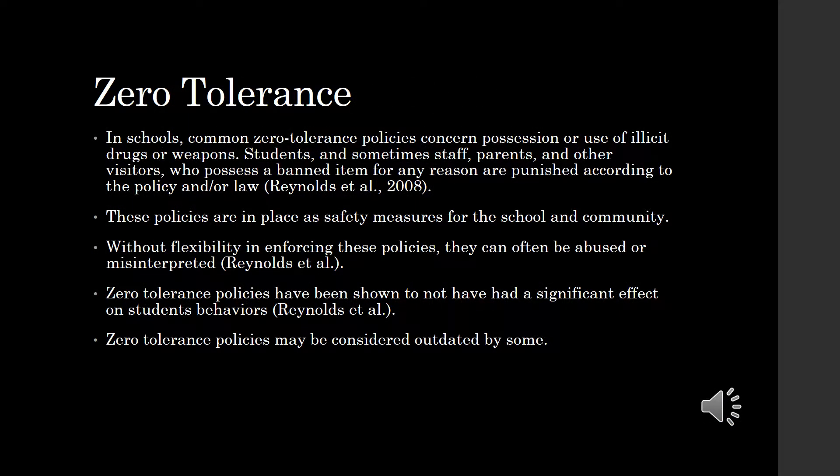Zero tolerance policies were instituted in the 1990s. While they were meant to be deterrents to such acts as Columbine, they have not proven to be as effective as anticipated. However, there are ways that zero tolerance policies can remain in place but with reforms to mirror the needs of their schools and communities. The expertise and experience of teachers and administrators should be taken into consideration when implementing zero tolerance policies, which would allow for flexibility when needed to fairly and justly enforce the policy in question.